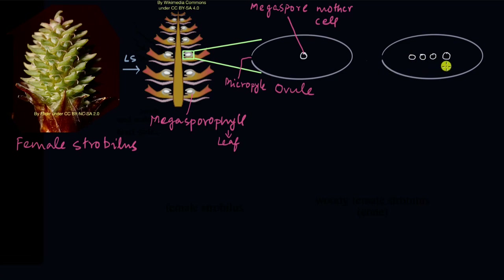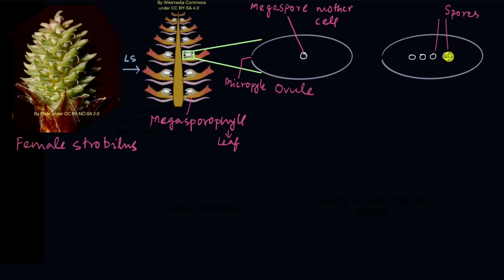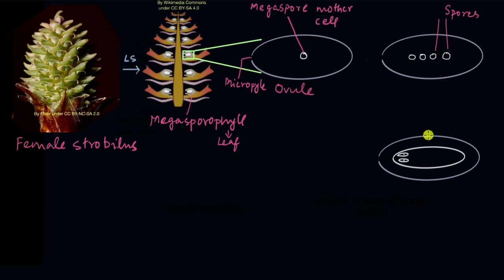The megaspore mother cell was diploid, and after meiosis the four spores that result are each haploid. With time, three of the spores degenerate, and there is one spore that remains — that is the spore that's important. It divides by mitosis to give rise to a larger structure called the female gametophyte.